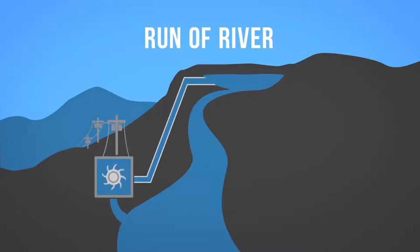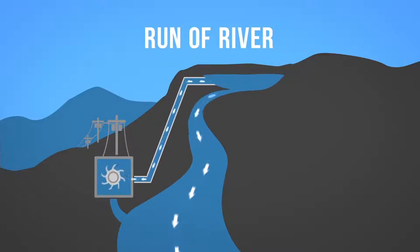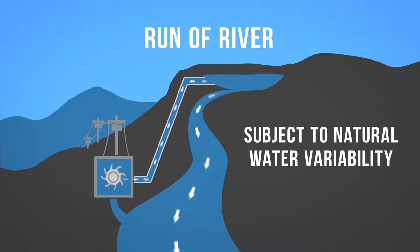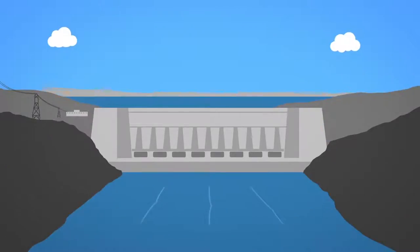The second form of hydroelectricity production is run of river hydro. Run of river hydro still uses turbines and generators, but relies on natural water flow rates of rivers, diverting just a portion of the water through turbines. Because run of river hydro is subject to natural water variability, it is more intermittent than dammed hydro.